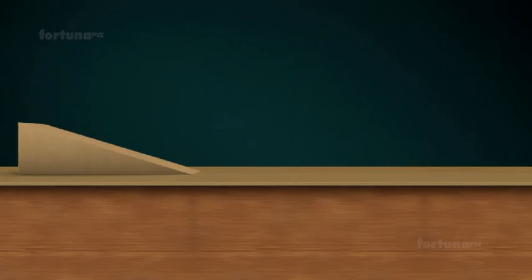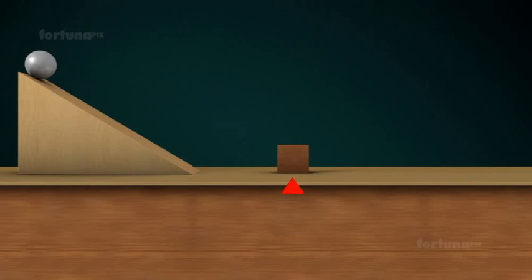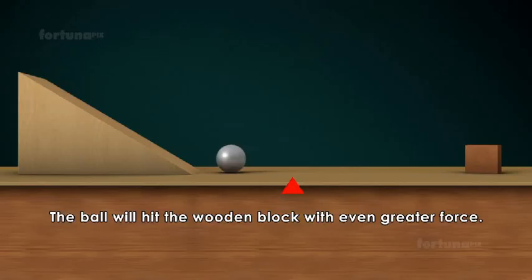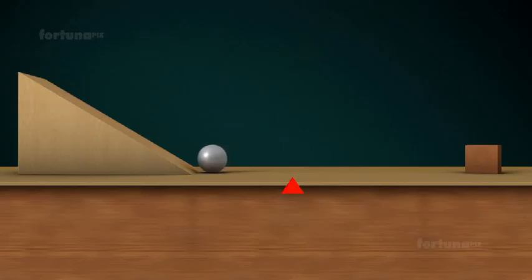Now let's increase the inclination of the plane and return the wooden block to its original position. Place the ball at the top of the incline, letting it roll freely downhill. The ball will hit the wooden block with even greater force, pushing it much farther. Again, note the new position of the wooden block, which was pushed much farther because of the ball's increased speed.